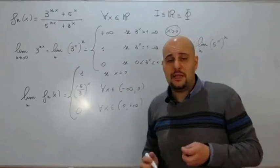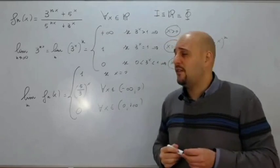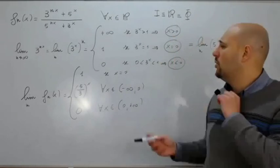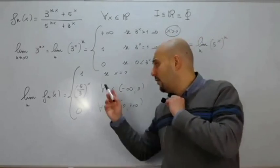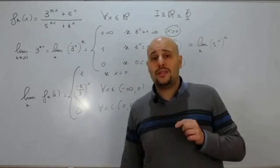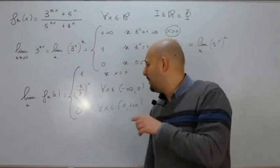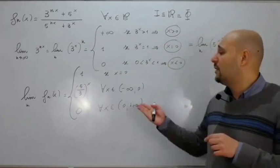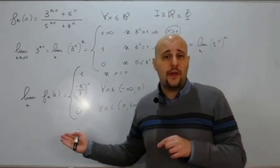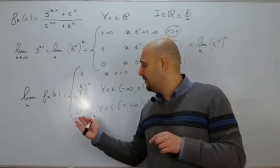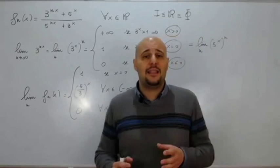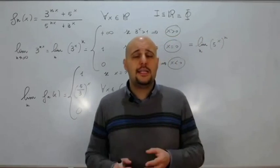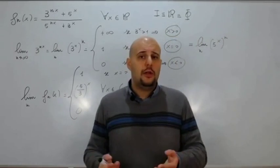La funzione limite, in definitiva, vale 1 se x = 0; vale (5/3)^x per ogni x appartenente all'intervallo (-∞, 0); vale 0 per ogni x appartenente all'intervallo (0, +∞).